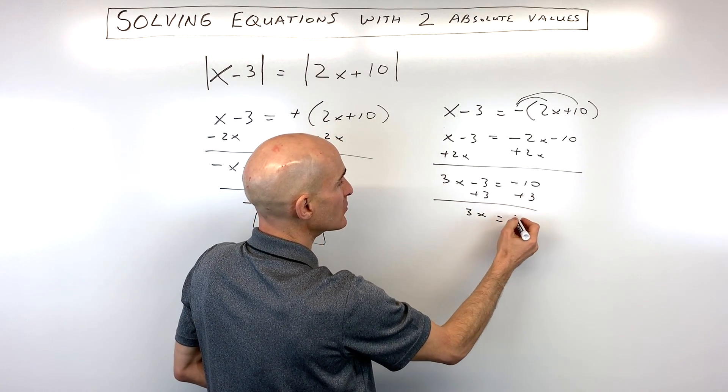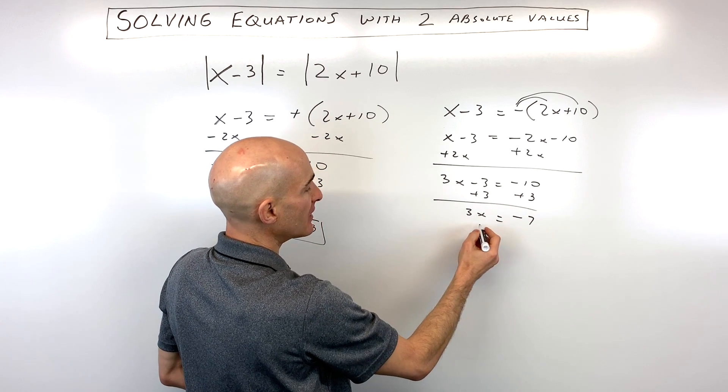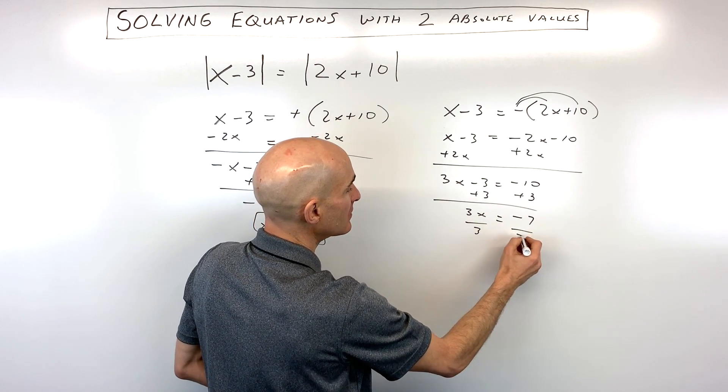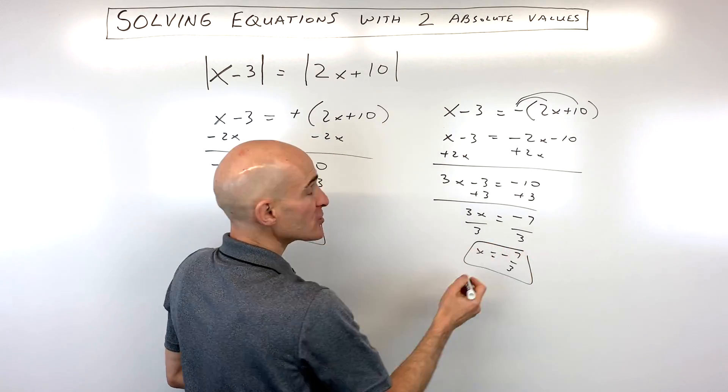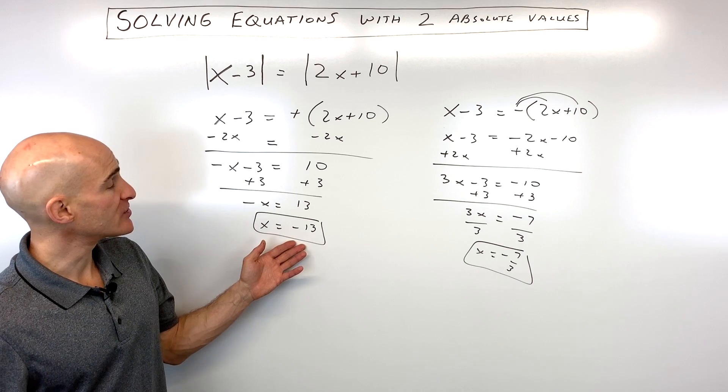So now we have 3x is equal to negative 7. And if I divide both sides by 3, x is equal to negative 7 thirds. So those are our two solutions: negative 7 thirds or negative 13.